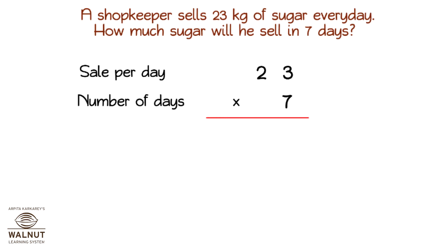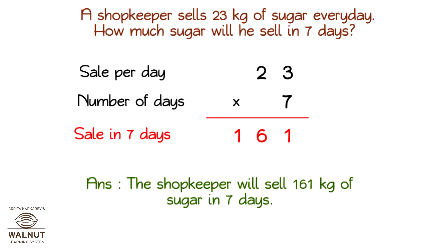We write the numbers properly one below the other and start. Then we multiply 23 by 7 and we get the answer 161. The shopkeeper will sell 161 kgs of sugar in 7 days.